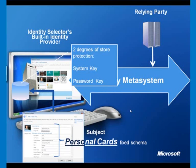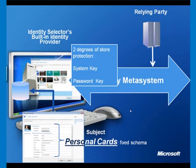The data store for personal cards has a fixed schema. The designers of the identity selector software and the interoperability profile could have allowed users to add whatever attribute they wanted — for example, a credit card number. But it was decided, rather in the way a government protects citizens from themselves, to protect users from doing things which are potentially dangerous or potentially a little bit silly. So the schema is fixed. If you wanted to use a flexible schema, you can do that with a proper security token service identity provider running on the internet, either by building your own or buying a vendor product.